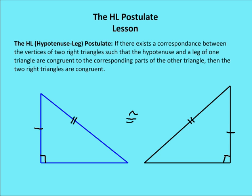The hypotenuse leg postulate says that if there is a correspondence between the vertices of two right triangles, such that the hypotenuse and the leg of one triangle are congruent to the corresponding parts of the other right triangle, then the two triangles are going to be congruent. The first requirement is we need to have two right triangles. The second requirement is we have the two hypotenuses that are congruent, and the two legs are congruent. If that's the case, then we have two congruent triangles.